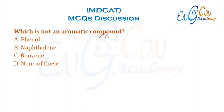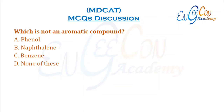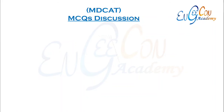Which is not an aromatic compound? Phenol is aromatic due to its benzene ring. Naphthalene is also aromatic due to its benzene ring. Benzene itself is aromatic. So the answer is D — none of the given options lacks aromaticity.